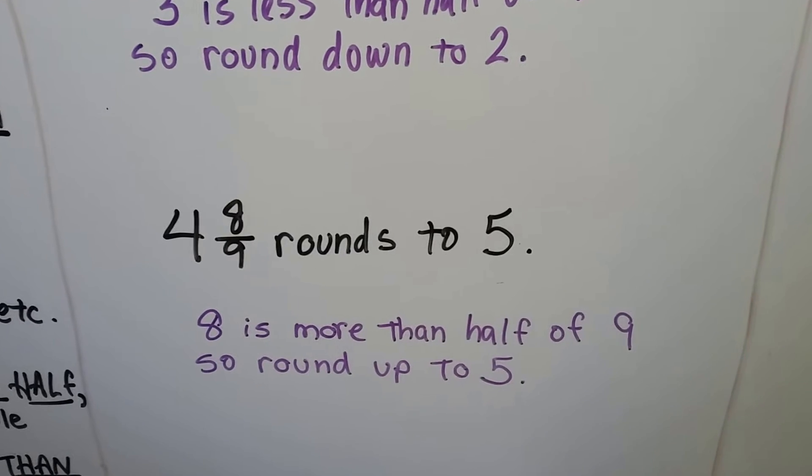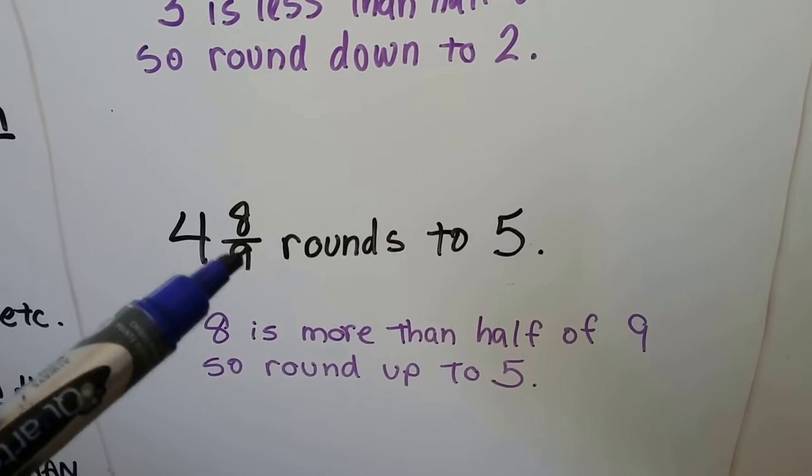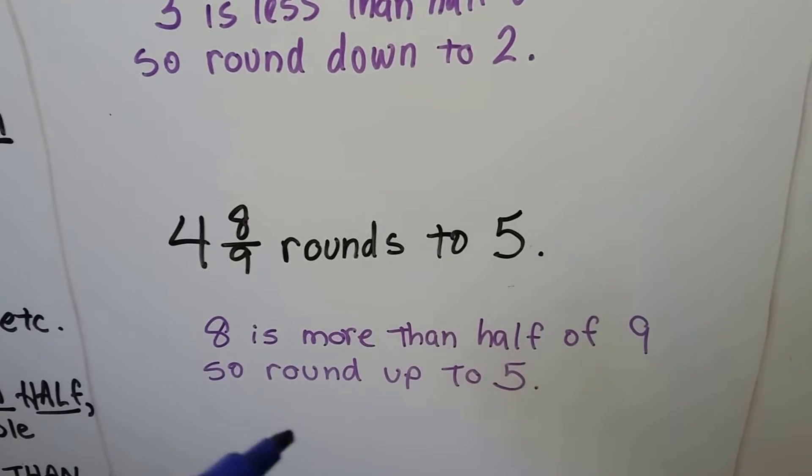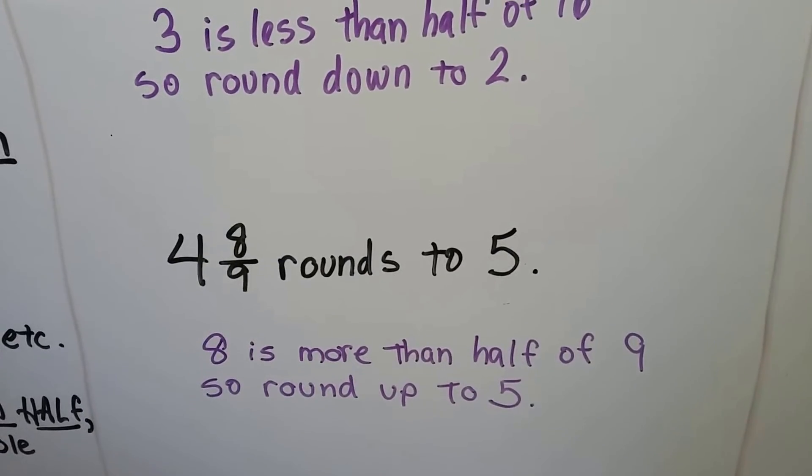Here we have 4 and 8 ninths. 8 ninths is really close to 9 ninths, which would be another whole. The 8 is more than half of 9, so we're going to round this mixed number up to 5.